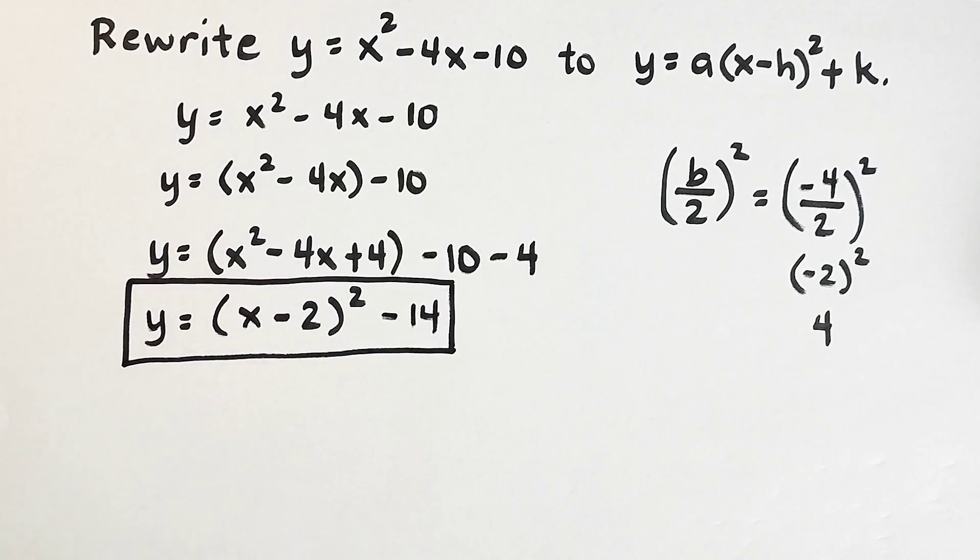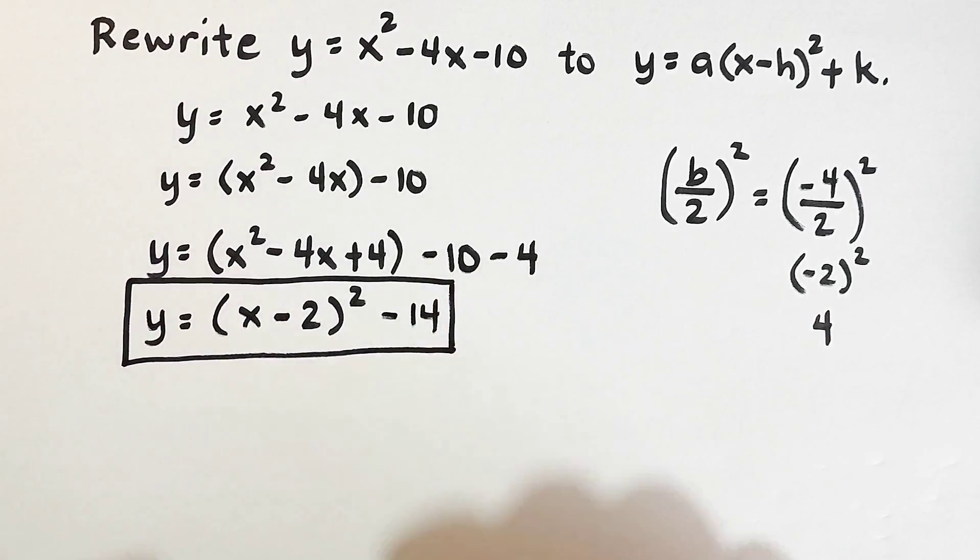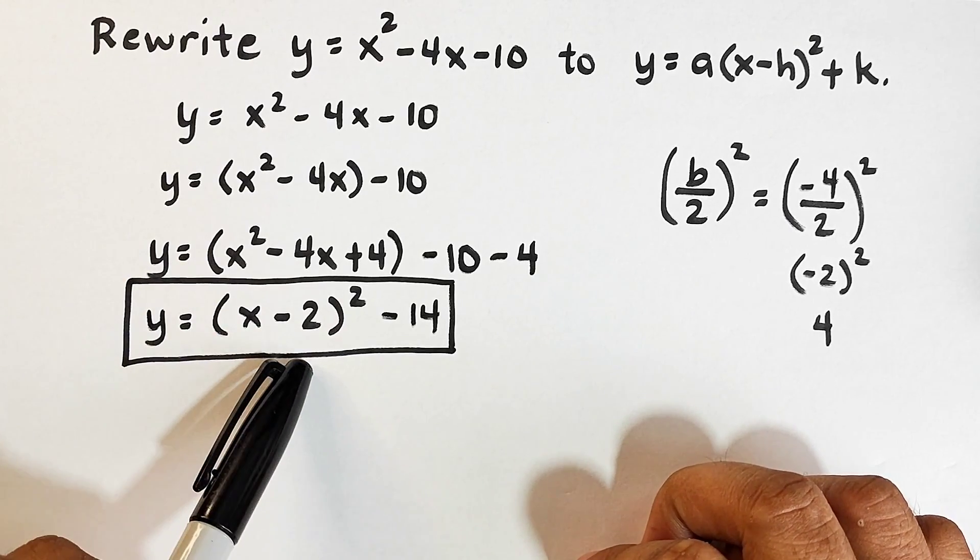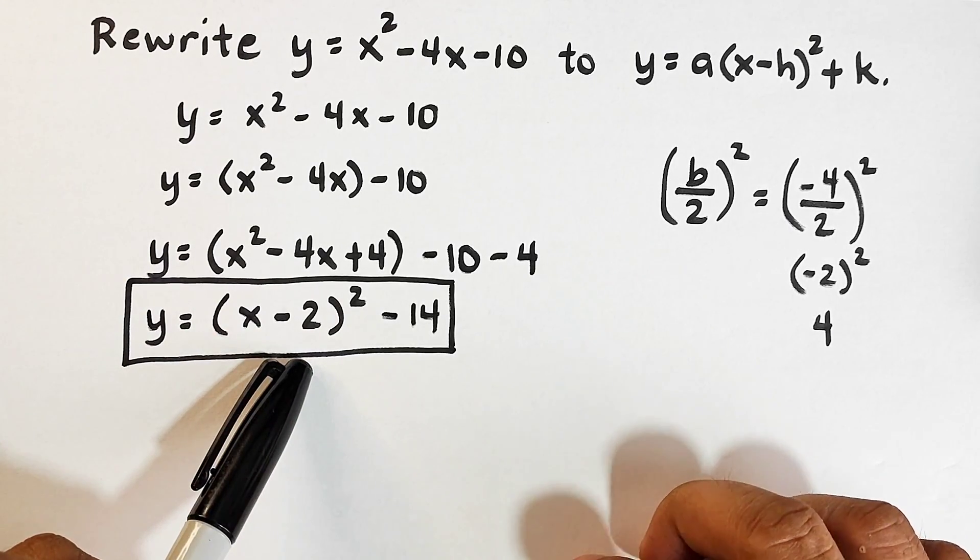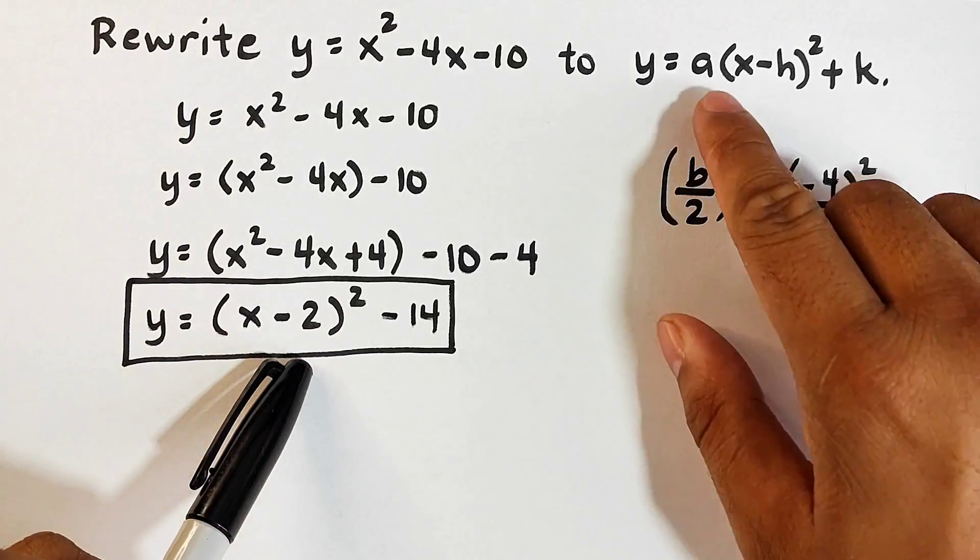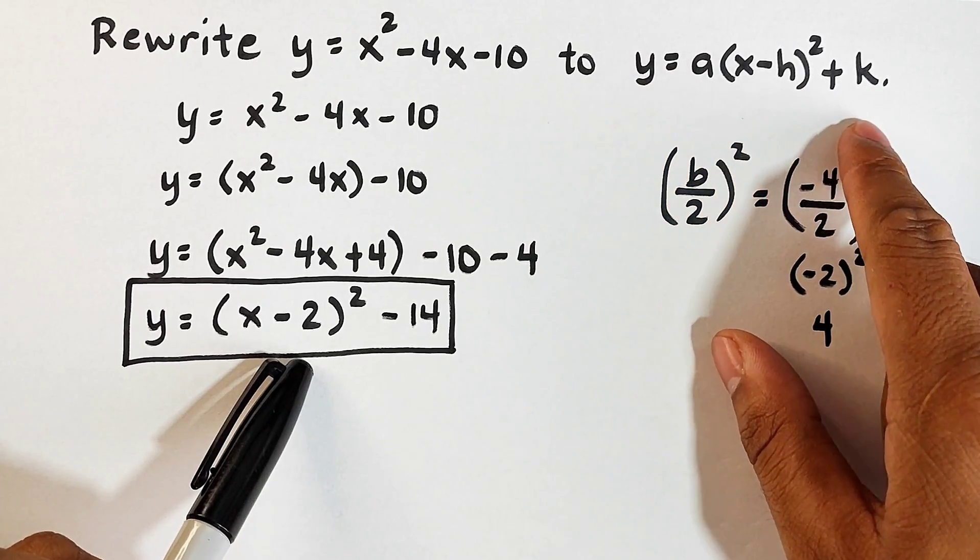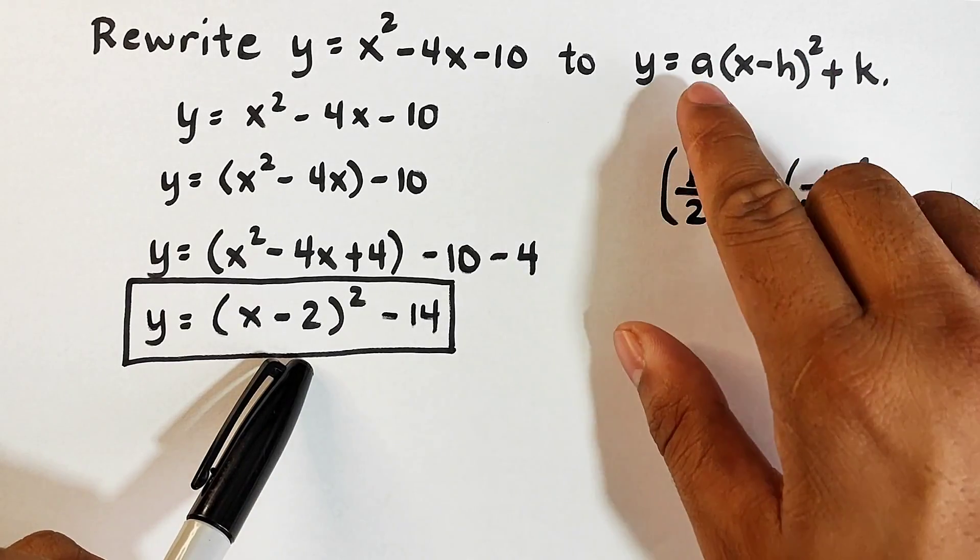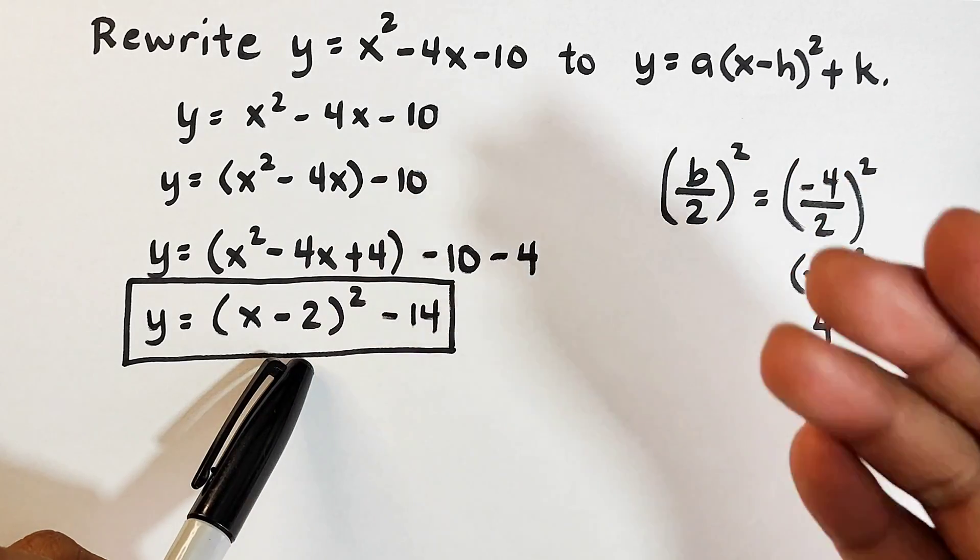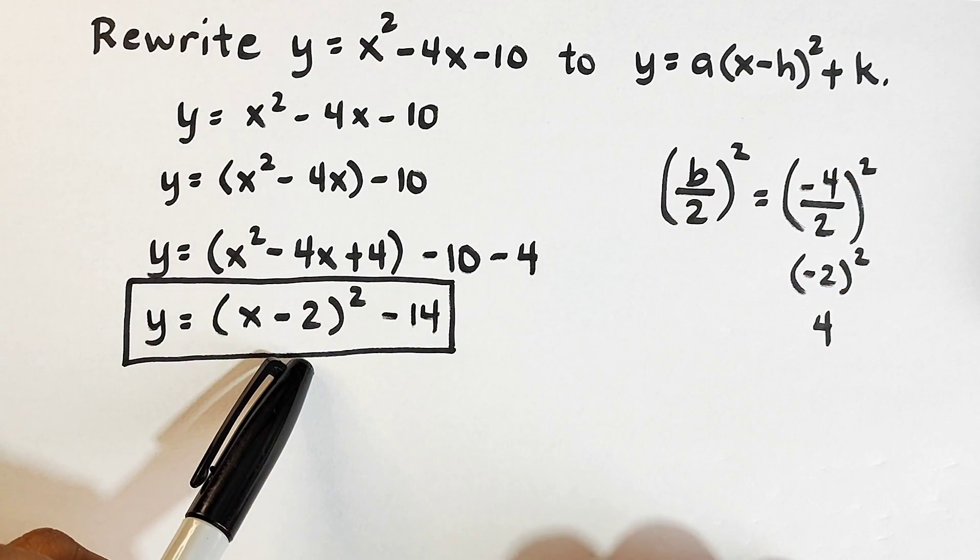Now, ano yung importance nito. When you know how to transform a quadratic function into vertex form, madali mo makukuha yung values ng A, H, and K. And these letters, A, H, and K, are essential in graphing quadratic function. So, try natin identify.